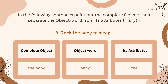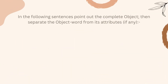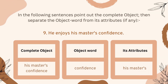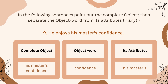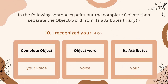Number nine: 'He enjoys his master's confidence.' 'His master's confidence' is the complete object. 'Confidence' is the object word, and 'his master's' — these words — are used as attributes.